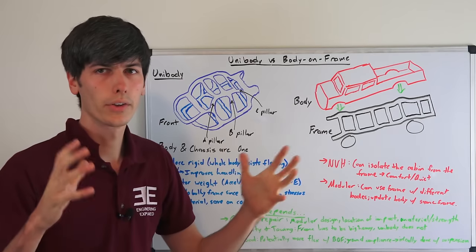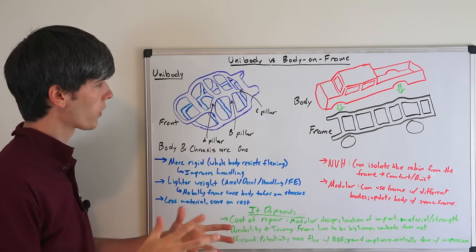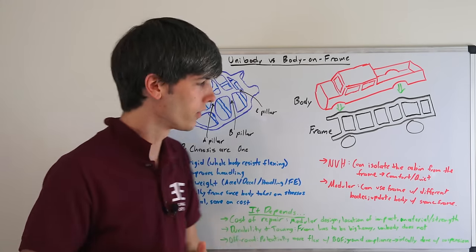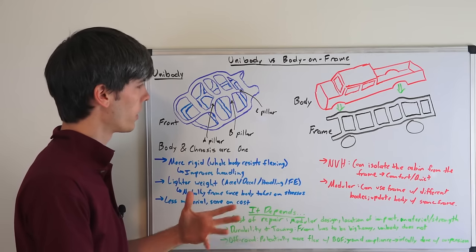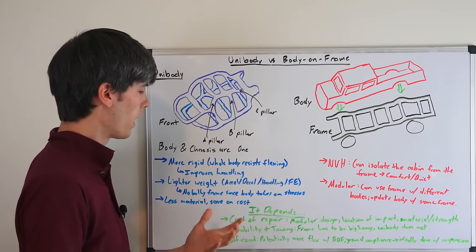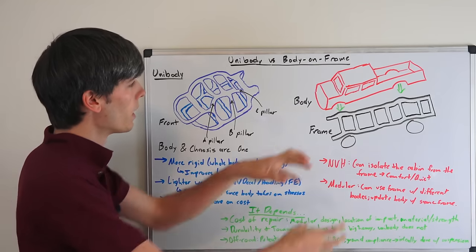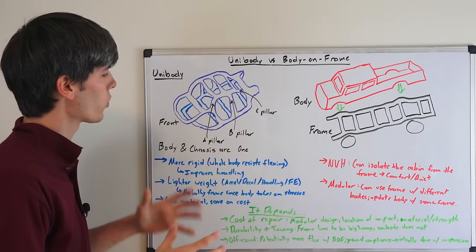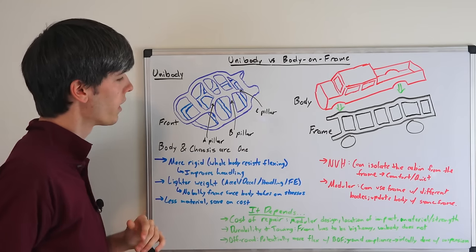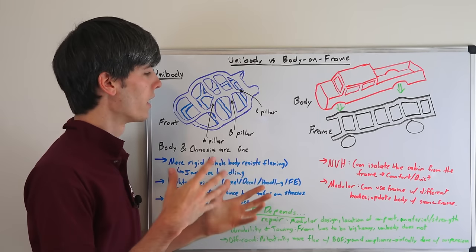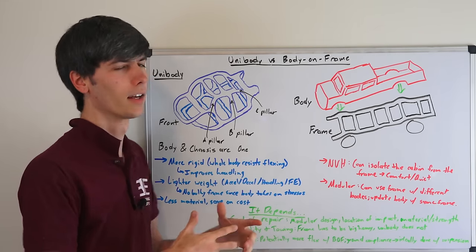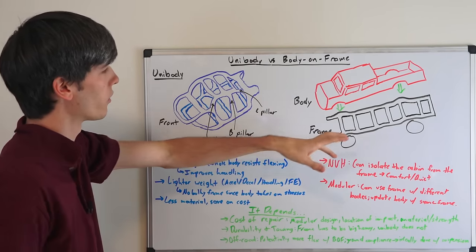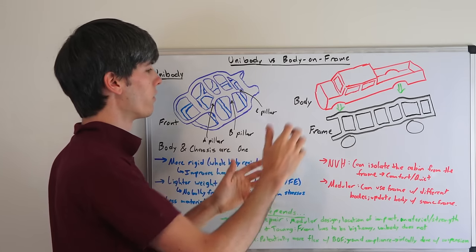Now there are some common misconceptions I think out there as far as what are the additional benefits of body on frame. So I'm going to have another category which I'm going to call 'It depends.' And basically what I'm saying here is that these aren't necessarily advantages for body on frame. Some people say cost of repair, because it's modular you won't have to bend out the unibody like you would have to do in a collision here. Totally depends. You could have a modular design here, and depending on the location of impact, the materials used, the strength, all these different things. And also this is going to absorb all of the impact with the whole body rather than the frame or the body individually. So it definitely depends. It's not necessarily an advantage for body on frame.